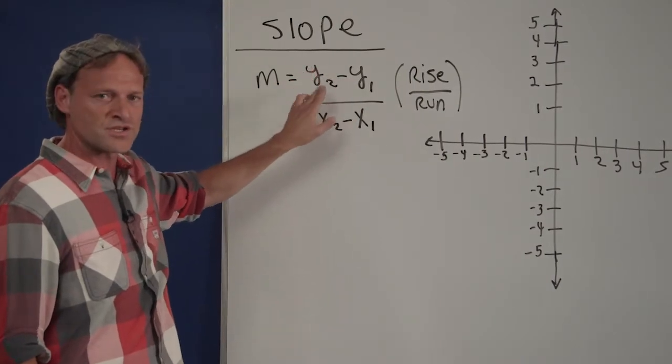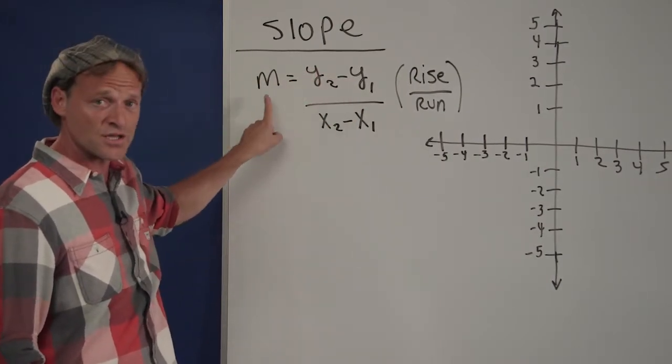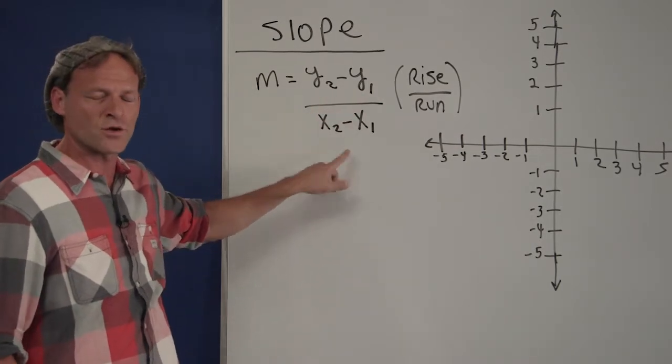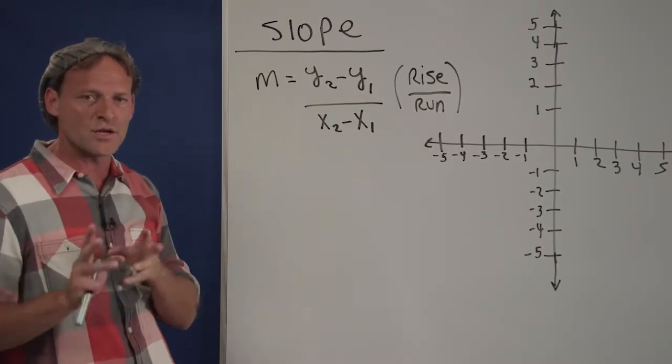Most people don't remember this equation. M, which stands for slope, equals y2 minus y1 over x2 minus x1. It's very abstract. I'm going to show you an easy way to deal with this.